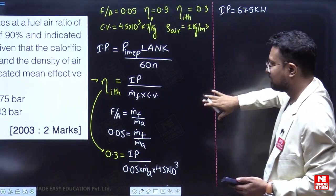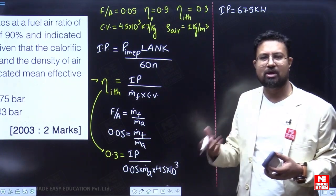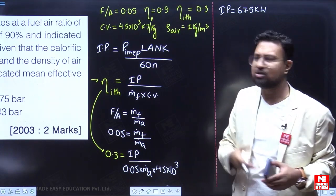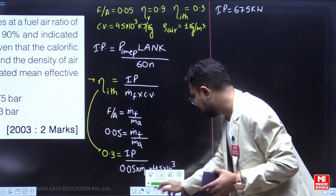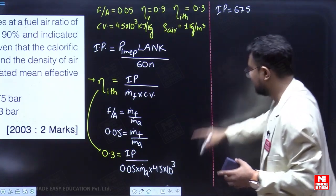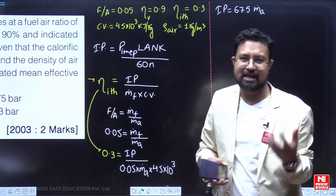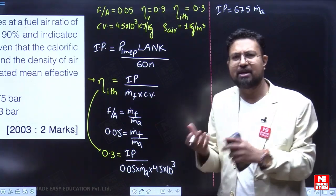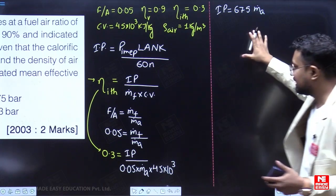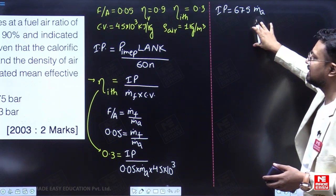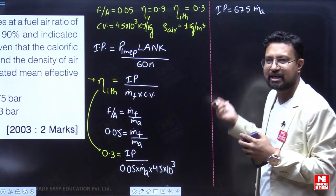The indicated power comes out to be 675 kW (when m_dot_a is in kg/s and calorific value is in kJ/kg). Now we need to use the volumetric efficiency. We still need to find what m_dot_a is.